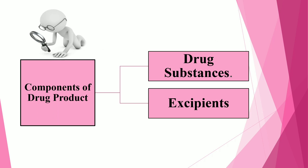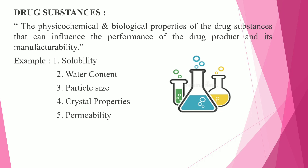The next topic is the components of drug product. Basically there are two types of components of the drug product: first is the drug substance and second is the excipient. The physicochemical and biological properties of the drug substances can influence the performance of the drug product and its manufacturability.